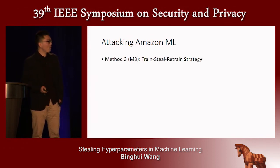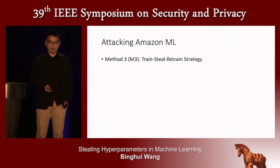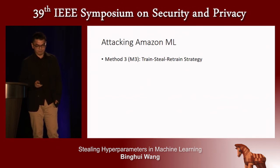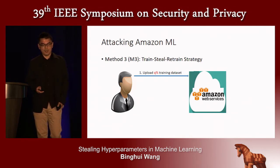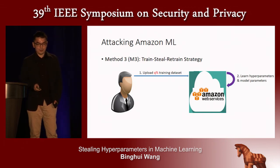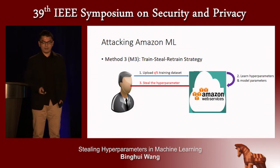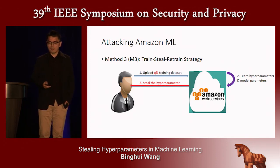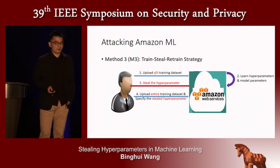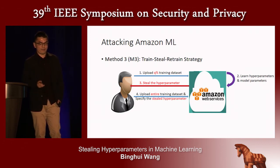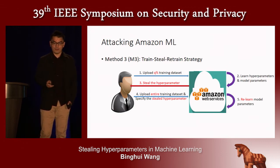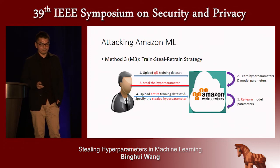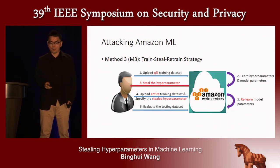To address the issues of M1 and M2, we propose Method 3, which uses a steal-and-retrain strategy. First, the user uploads a subset of the training dataset to Amazon Machine Learning, which learns hyperparameters and model parameters from that subset. The user then steals the hyperparameters using our attack. Next, the user uploads the entire training dataset and specifies the stolen hyperparameters to Amazon Machine Learning, which re-learns the model parameters over the full dataset. Finally, the user evaluates the test data by querying the learned model.